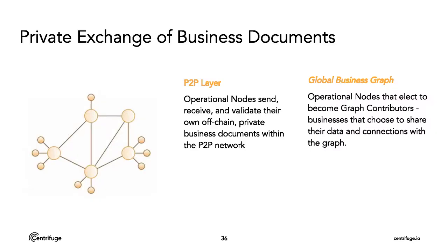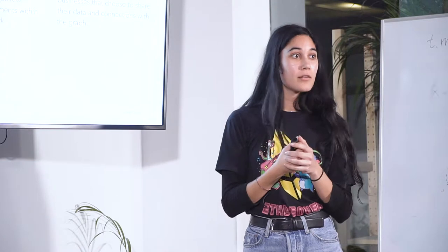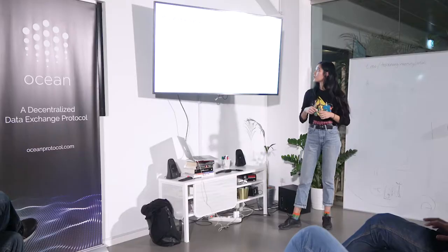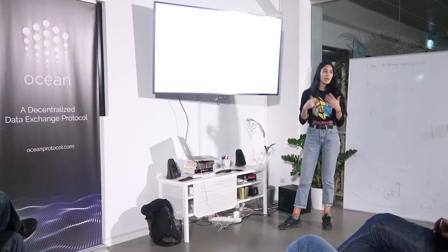Diving a little bit deeper into this peer-to-peer layer: you're running an operational node to be able to send, receive, and validate your own private documents. You're keeping all of this data private and only sharing it with parties that you know. The global business graph is also directly with parties that you know. Think of it like the Lightning Network or Raiden, where you're hopping between nodes that you actually have a direct connection with, not revealing private data or even the path taken to the party that your query eventually reaches down the line.